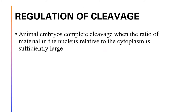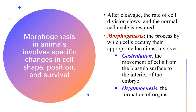How is cleavage regulated? Animal embryos complete cleavage when the ratio of the material in the nucleus relative to the cytoplasm is sufficiently large. For morphogenesis in animals, it involves specific changes in cell shape, position, and survival. After cleavage, the rate of cell division slows and the normal cell cycle is restored. Morphogenesis is the process by which cells occupy their appropriate locations, and this involves first gastrulation — the movement of cells from the blastula surface to the interior of the embryo — and then organogenesis, which is the formation of the organs.